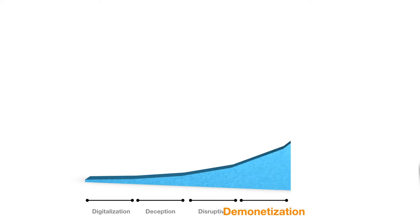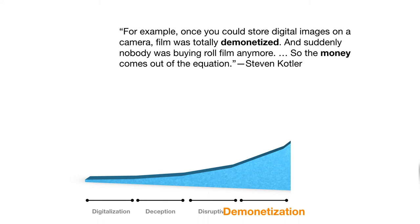The fourth D is demonetization. At that point, a lot of the money gets driven out of whatever medium we're talking about. For example, once you could store digital images on a camera, film was totally demonetized — suddenly nobody was buying film rolls anymore. The money simply comes out of the equation.